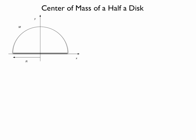We will calculate the center of mass of a half a disk. We break the disk into rings with radius r, mass dm, and area dA, and we will use the result for the center of mass of a half a ring.